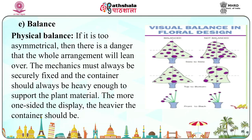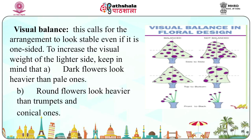Balance: Physical balance is essential — if the arrangement is too asymmetrical there is a danger the whole arrangement will lean over. Mechanics must always be securely fixed and the container should always be heavy enough to support the plant material; the more one-sided the display, the heavier the container should be. Visual balance calls for the arrangement to look stable even if it is one-sided. Dark flowers look heavier than pale ones, and round flowers look heavier than trumpet and conical ones.